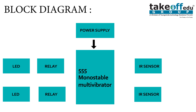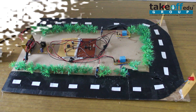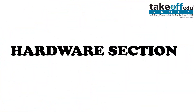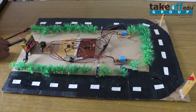The power supply circuit is used to give supply to the other circuits. There is a monostable multivibrator circuit, and the two IR sensors work as inputs to the multivibrator circuit. The output of the multivibrator circuit is given to the relays, which act as switches, and two LEDs are used for the indication purpose.